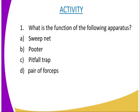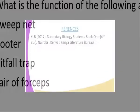We are going to have the following activity: give the functions of the following apparatus — the sweep net, the aspirator/pooter, the pitfall trap, and the pair of forceps. There are also other apparatus not covered here, like the hand lens, which is an instrument used to enlarge objects. It is used in examining external features of collected specimens and works similarly to a microscope.